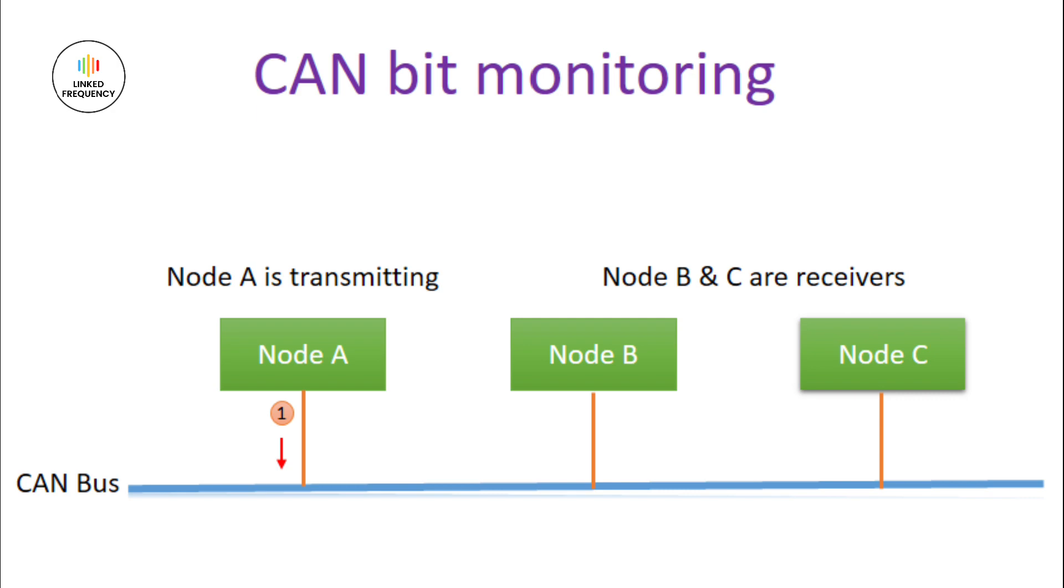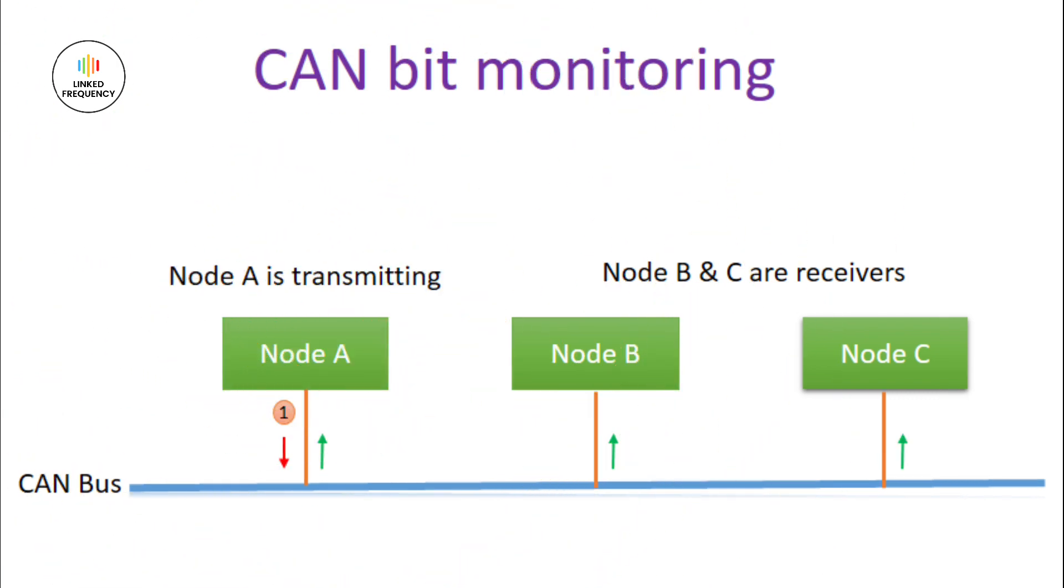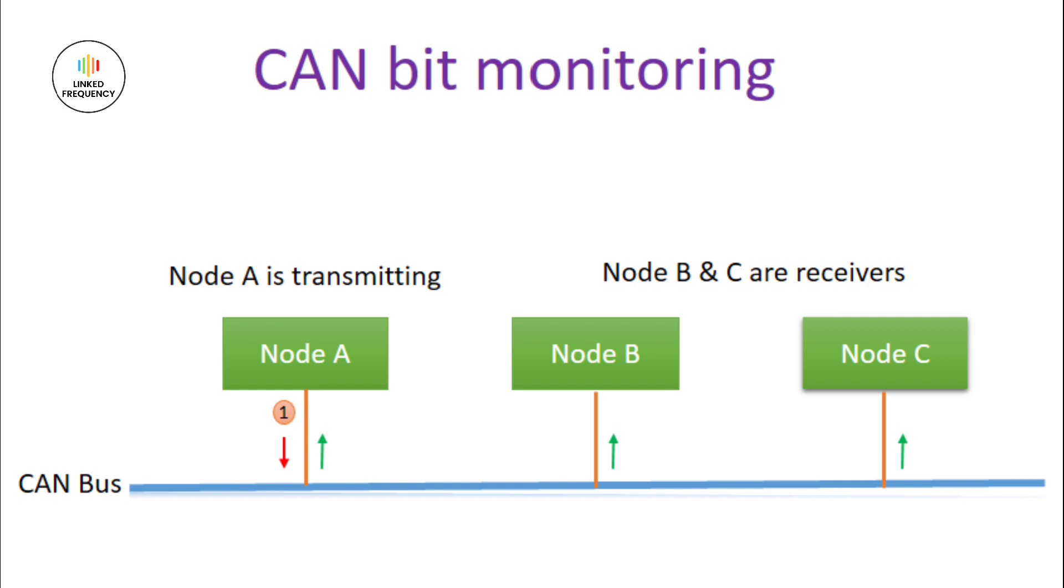Let's consider Node A is sending the value 1, and the remaining nodes receive the data. Now, Node A tries to verify that the data was properly sent by monitoring or reading back